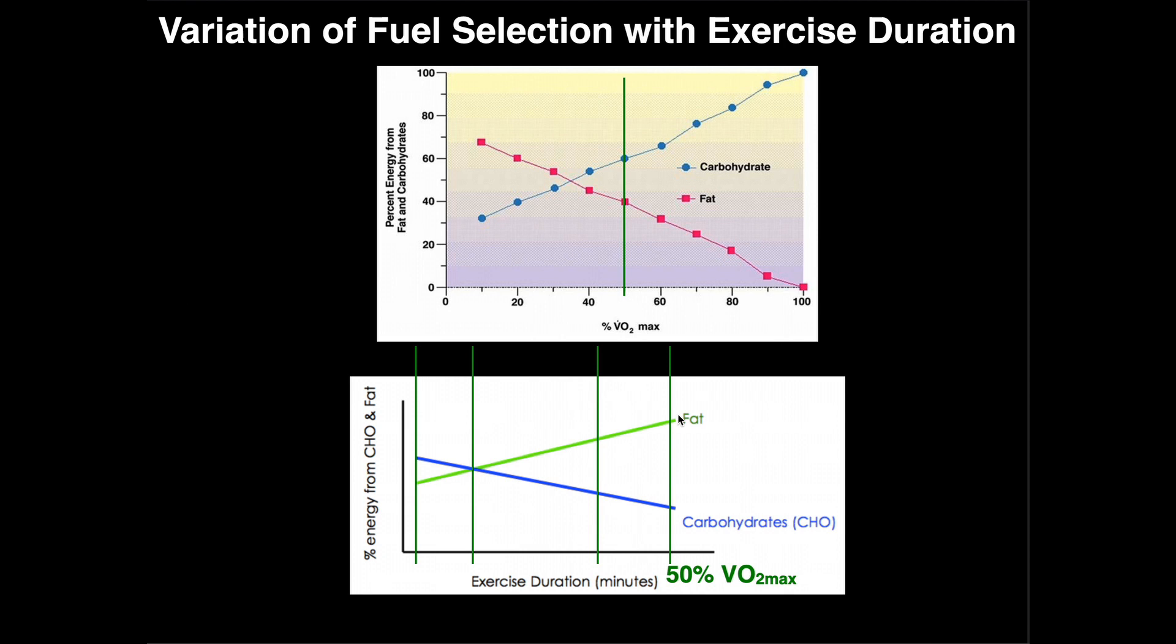Now the key here to make sure you understand is the difference between these two figures. The one on the top is how the fuel source varies with the intensity of the exercise. The one we just discussed is how it varies with the duration. And you should understand the reason why we rely more on fat as exercise duration is prolonged. And it actually doesn't matter what exercise intensity we are.